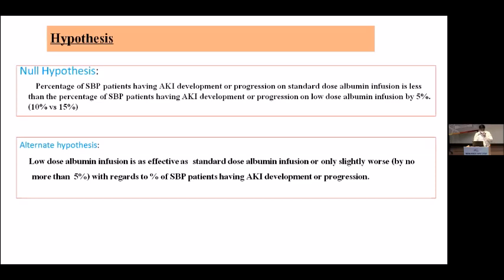We came to the hypothesis: the null hypothesis is that the percentage of SBP patients having AKI development, progression, or resolution with standard dose albumin is less than the percentage of SBP patients having AKI development or progression on low dose albumin therapy. The alternative hypothesis is that low dose albumin infusion is as effective as standard dose albumin therapy in AKI resolution or progression.